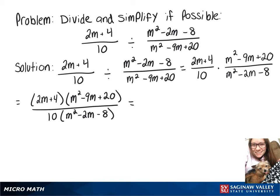With 2m plus 4 we can factor out a 2 and that leaves m plus 2. And then we have a quadratic which we can factor into m minus 5 times m minus 4.